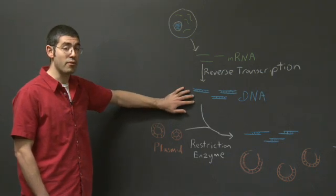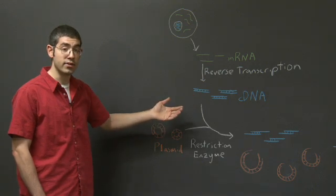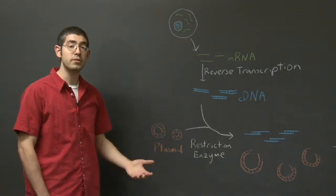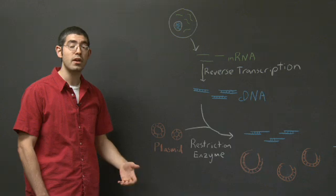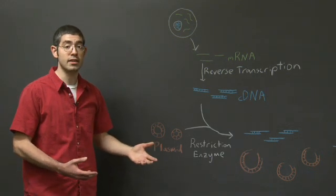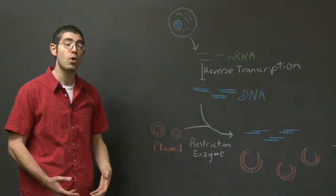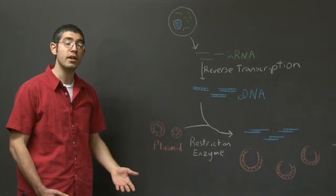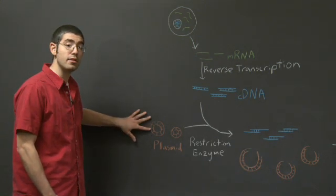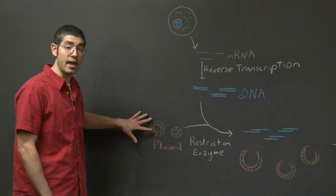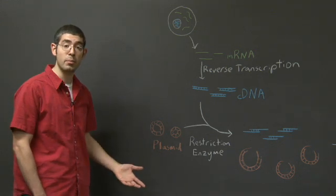The next step, of course, is to get the cDNA into the bacteria. We do this using something called a vector. A vector is just a means of getting DNA into a cell. One common type of vector is a plasmid. The plasmid is a circular piece of DNA that the bacteria can then take up and read.